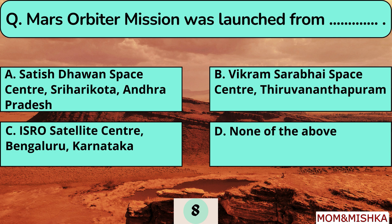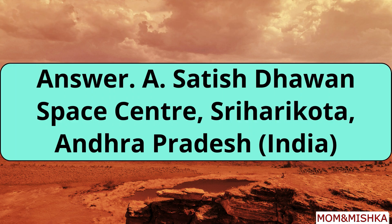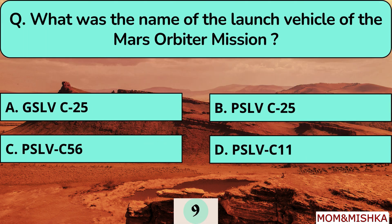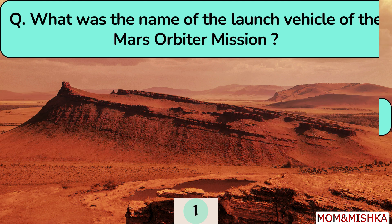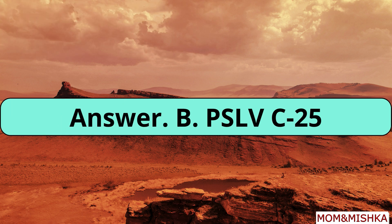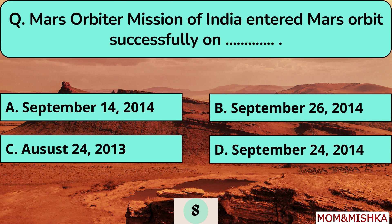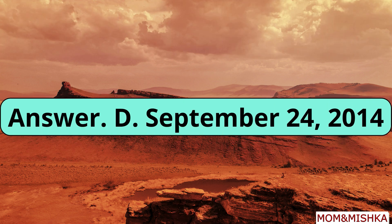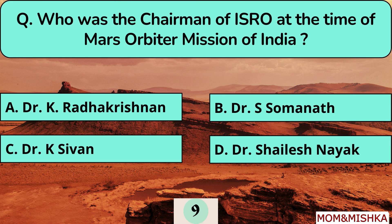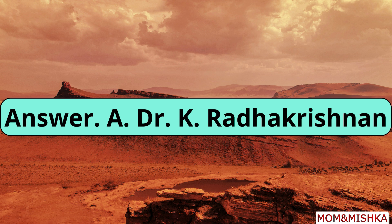The Mars Orbiter Mission was launched from Satish Dhawan Space Center, Sriharikota, Andhra Pradesh, India. The launch vehicle was PSLV-C25. The Mars Orbiter Mission successfully entered Mars orbit on September 24, 2014. The chairman of ISRO at the time of the Mars Orbiter Mission was Dr. K. Radhakrishnan.